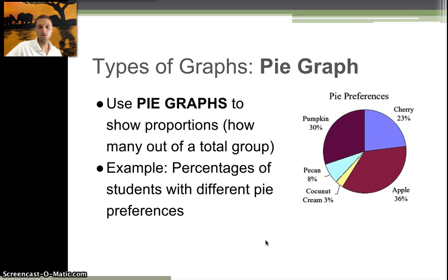The last type of graph is called a pie graph. I'm sure you've probably seen these before. What's important about a pie graph is that it shows a proportion, or how many out of a total group. Let's say we have a group of people and we ask how many people like pumpkin pie, cherry pie, apple, coconut, pecan. These are the results we get. If we have a set number of people, maybe we sample 50 people, we can count up and determine how many people like pumpkin and how many like cherry and how many like apple.